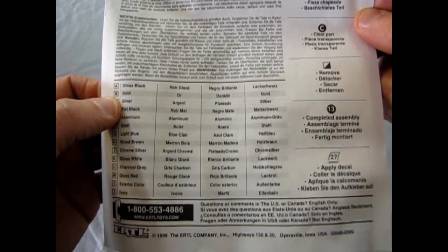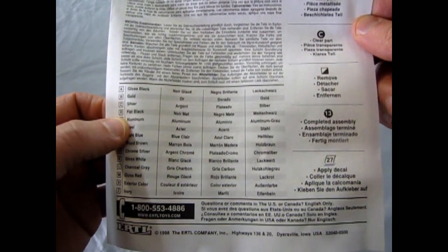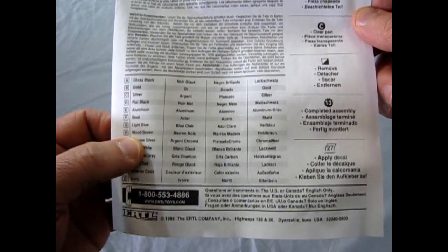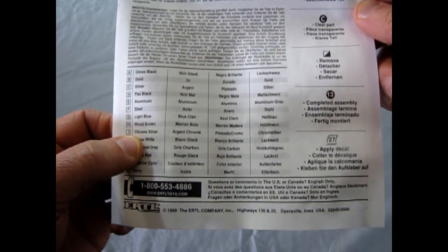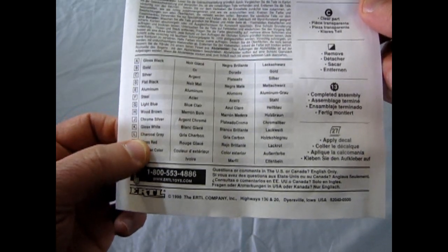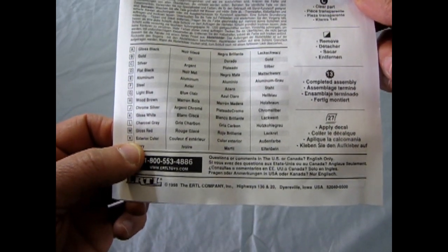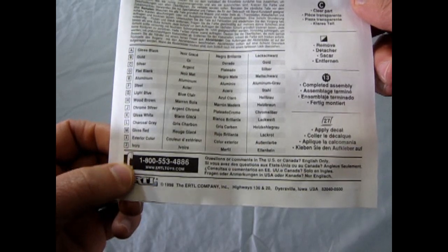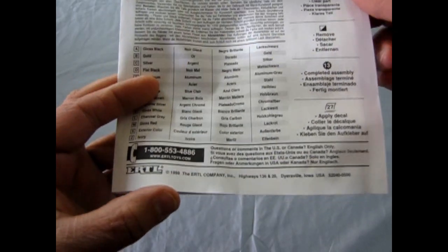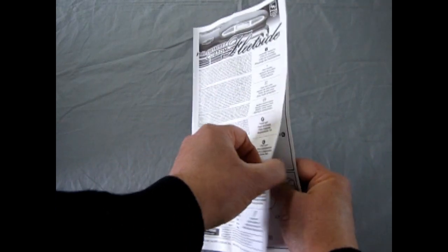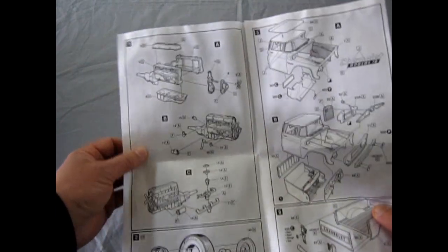A is gloss black, B is gold, C is silver, D is flat black, E aluminum, F steel, G light blue, H wood brown, J chrome silver, K is gloss white, L is charcoal gray, M is gloss gray, X is the exterior color, and Z is ivory. Anyway, we will open this up and take a look.